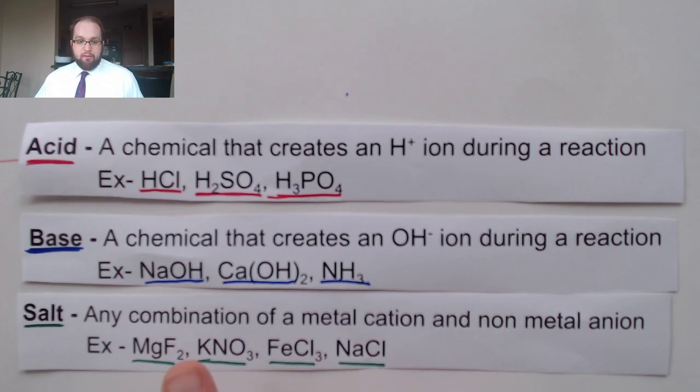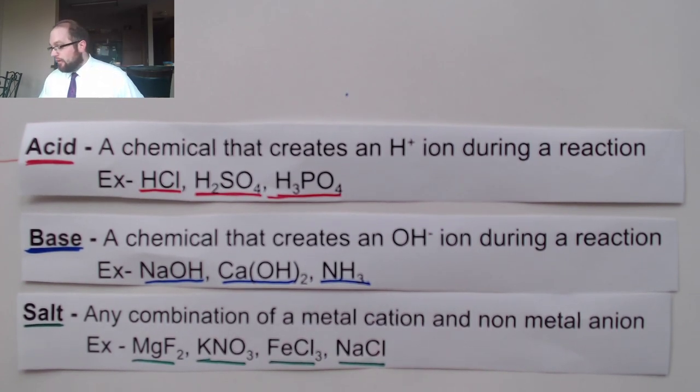So magnesium and fluorine, metal and non-metal. Potassium and nitrate, polyatomics are non-metals. Here's iron chloride and of course NaCl, table salt, would also count as a salt itself.